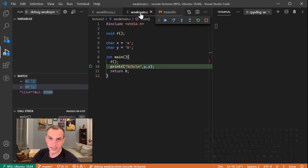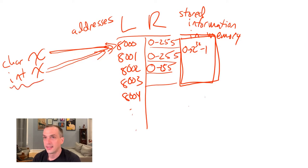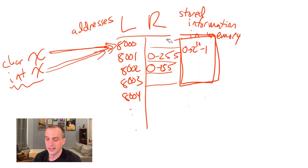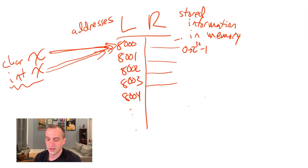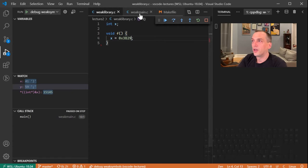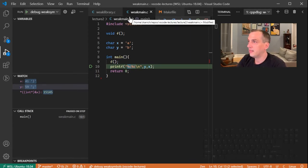It's what I was hinting at earlier. When we have our char X pointing at a specific address and our int X pointing at the same address, when we write to the integer X, weak_library was compiled with the idea that four bytes are allocated to X. Writing in little-endian on our x86 processor, it wipes out those four values and puts 0x29 here, then 0x3B, then 0x00 and 0x00. So now when we come back and interpret those two variables as characters, we get hex 0x29 and hex 0x3B.